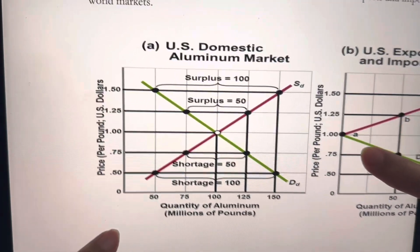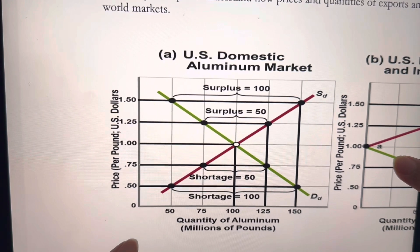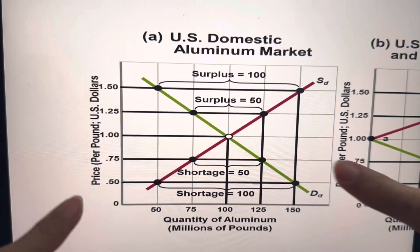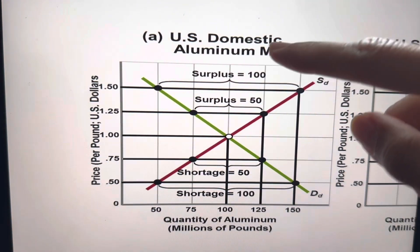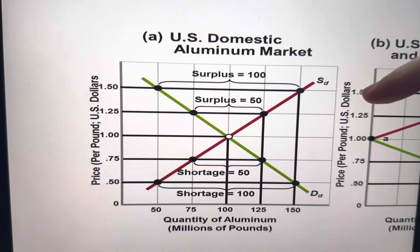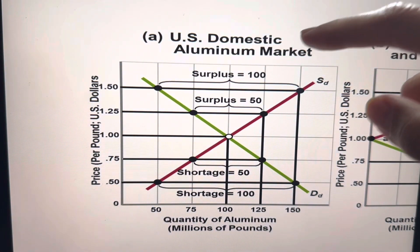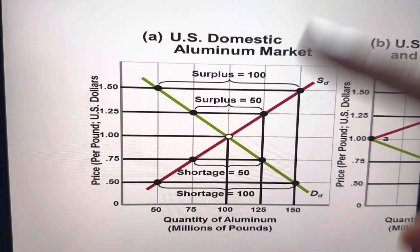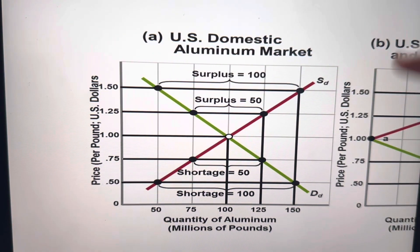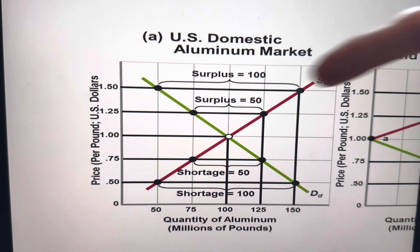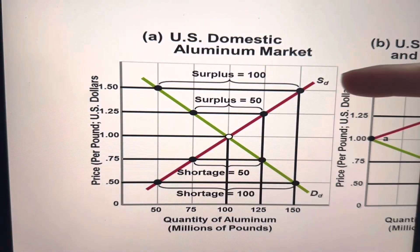Let's just focus on this left-hand side first. Here what we have is the U.S. domestic aluminum market. You know what domestic means, right? It's where the supply and demand domestically in the U.S. market for aluminum. As you can see, this is the demand curve and the supply curve.